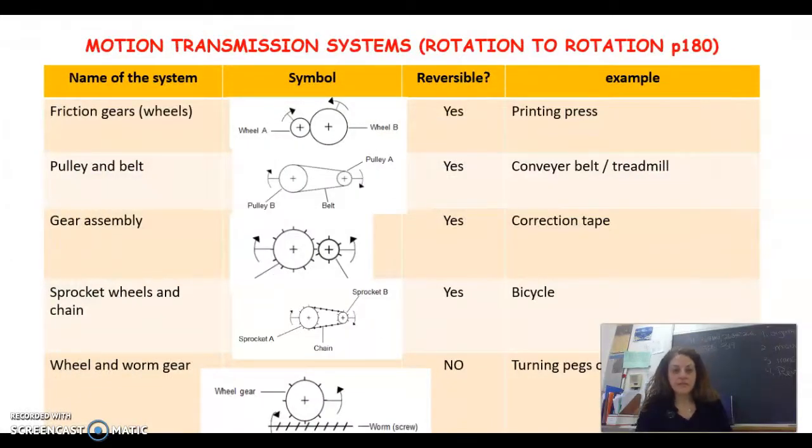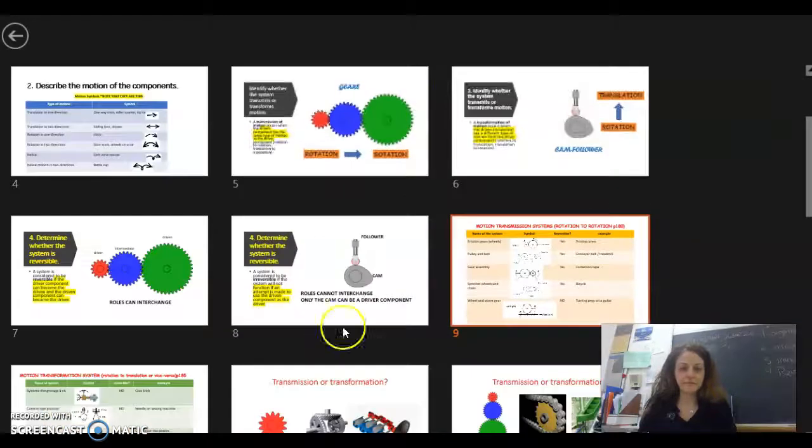I'll give you a few minutes to take a look at this. We have the motion transmission systems, we have five of them, and pay attention on the top here they all rotations turn to rotation as well, or they transmit. So if we take a look we have the friction gears and we have the two rotational arrows in opposite directions. Pulley and belt same direction thanks to the belt. Gear assembly opposite direction. Sprocket wheels and chain, so a bit like your bicycle.